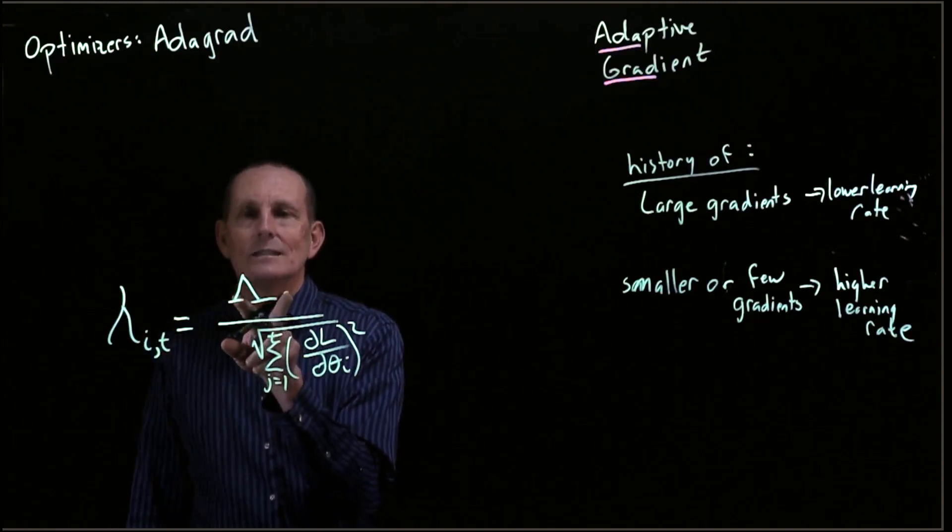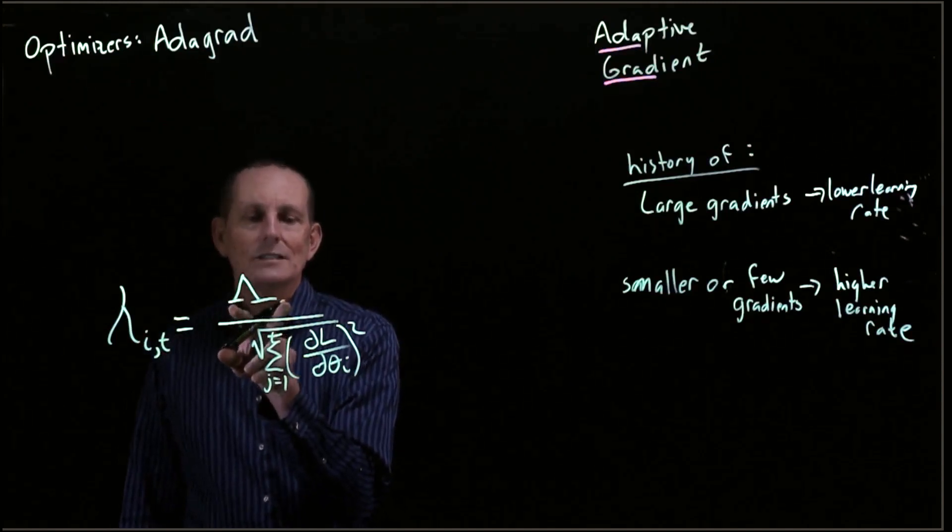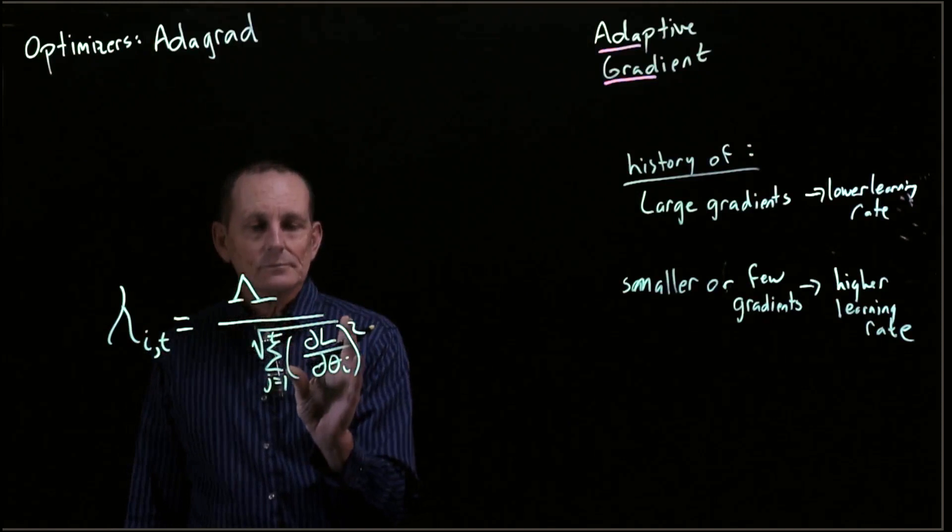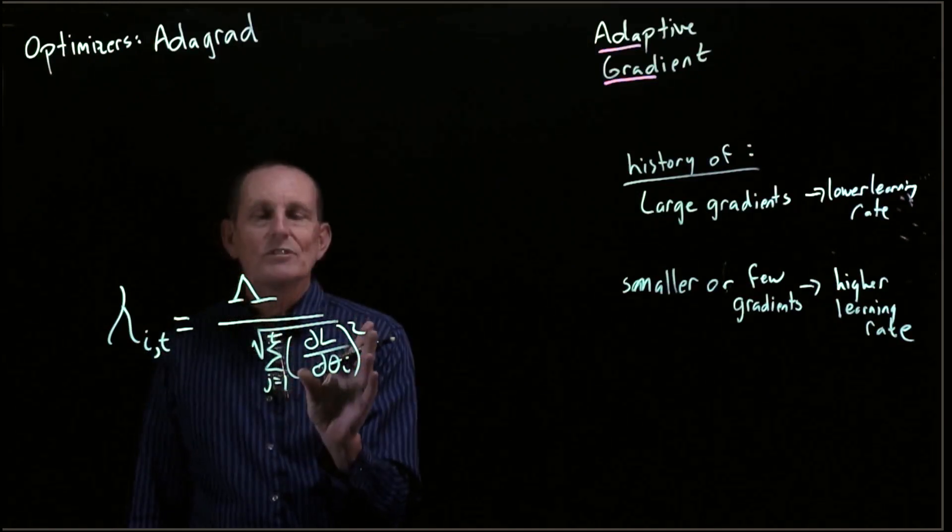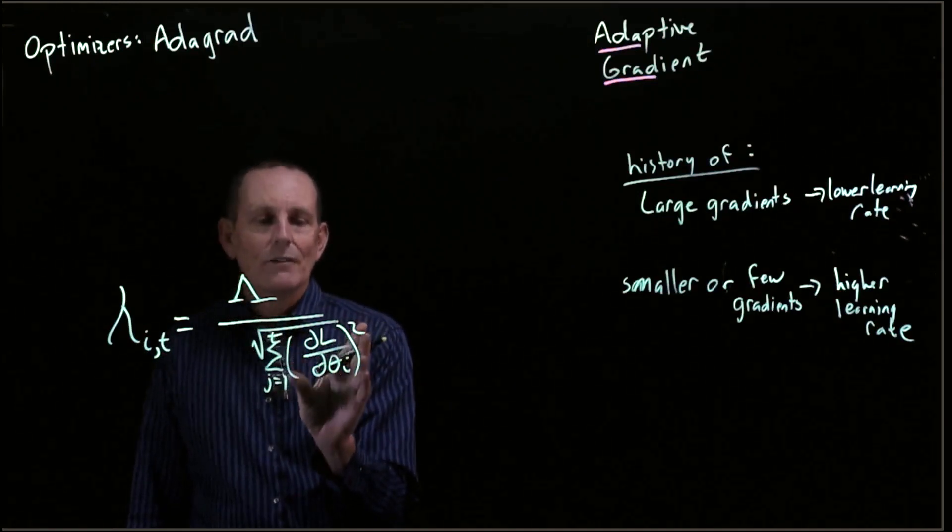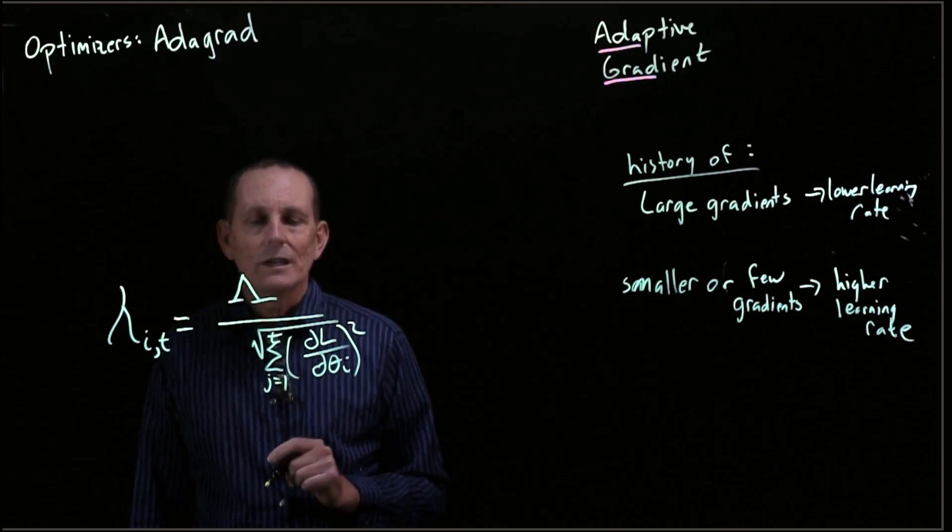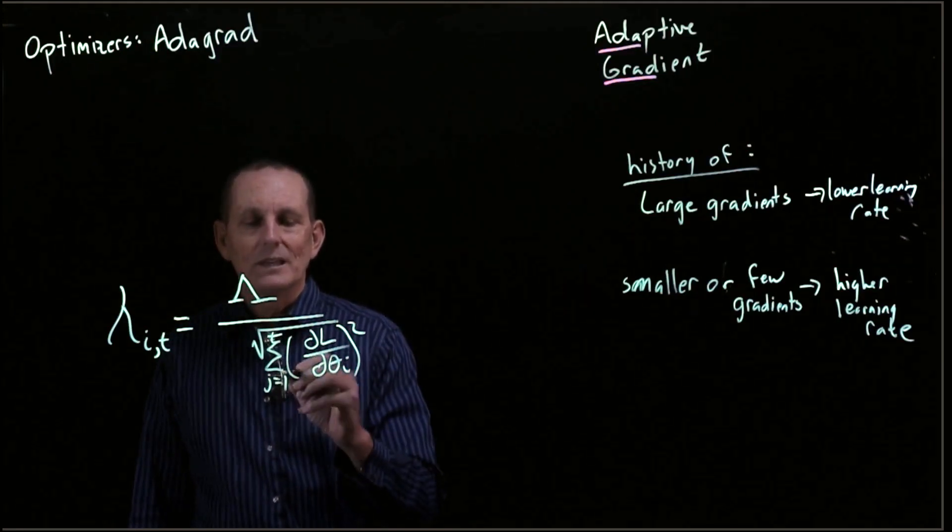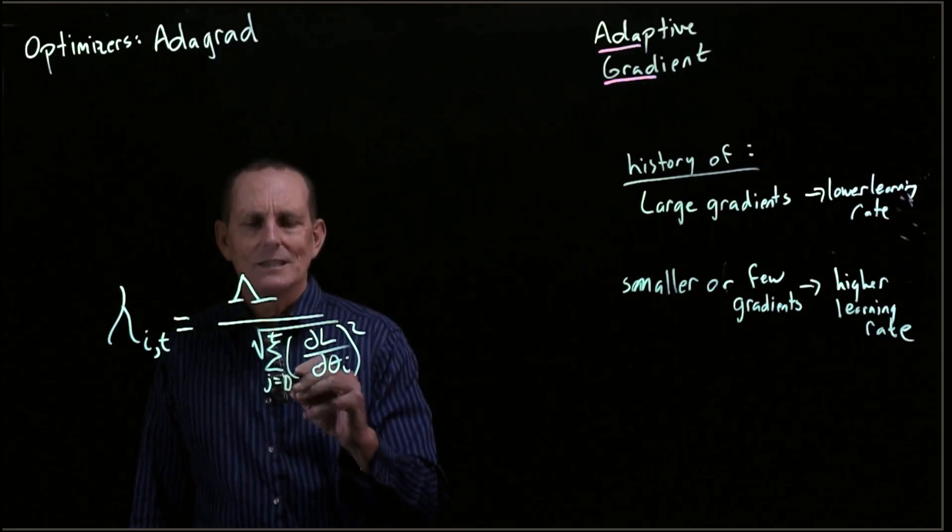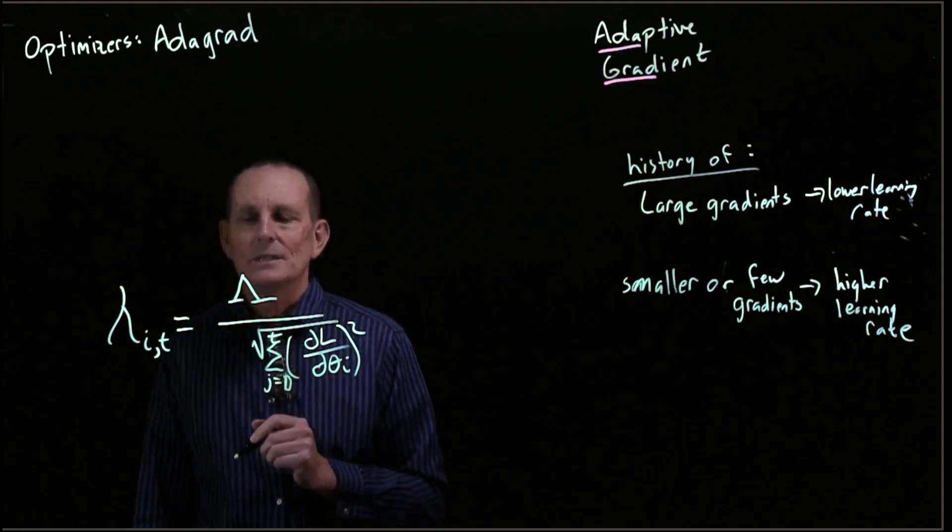We're going to say that's some absolute constant divided by the square root of the sum of squares of gradients from the beginning of time, let's say the beginning of time starts at 0 up to t.